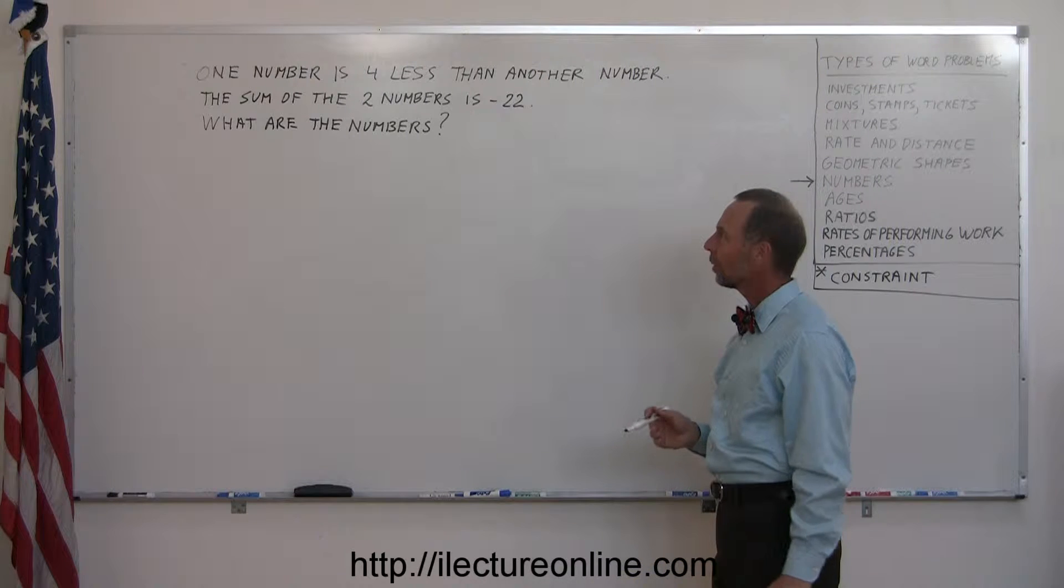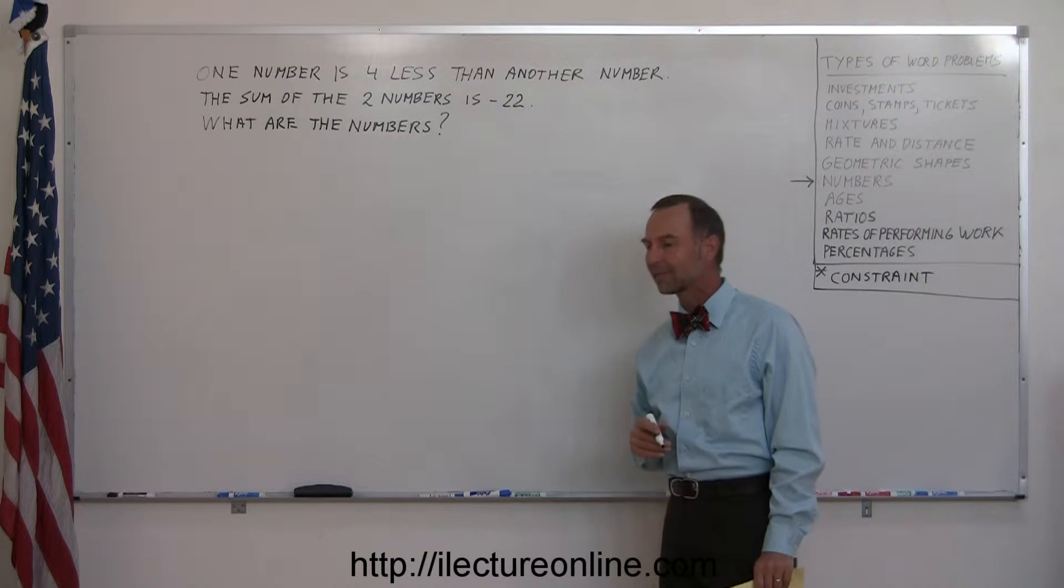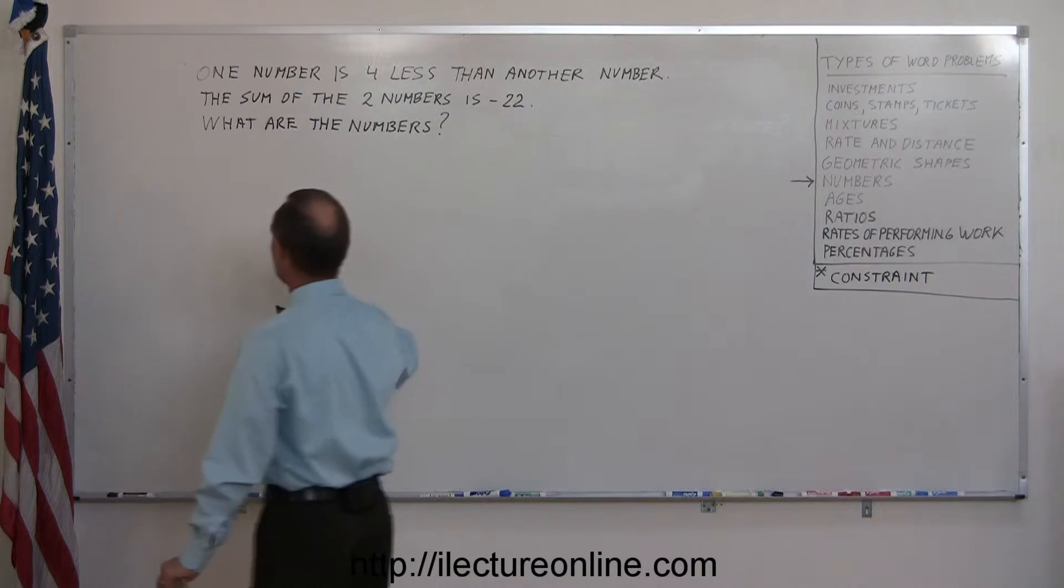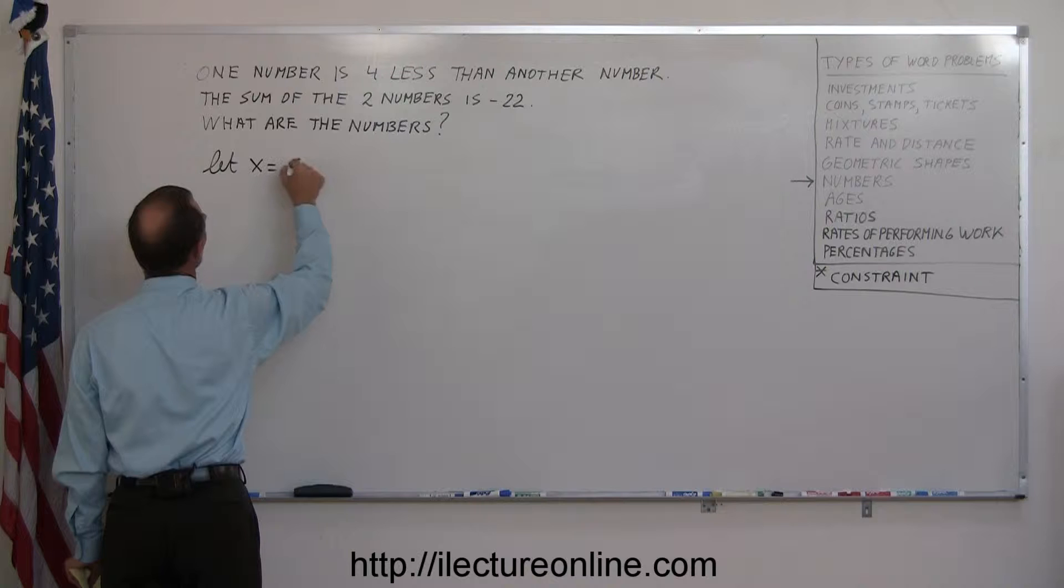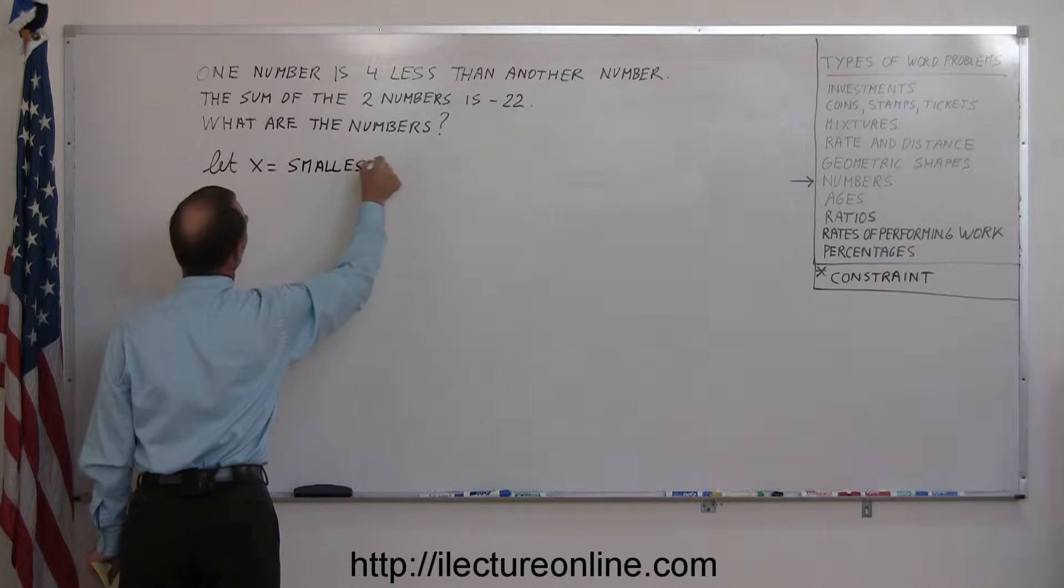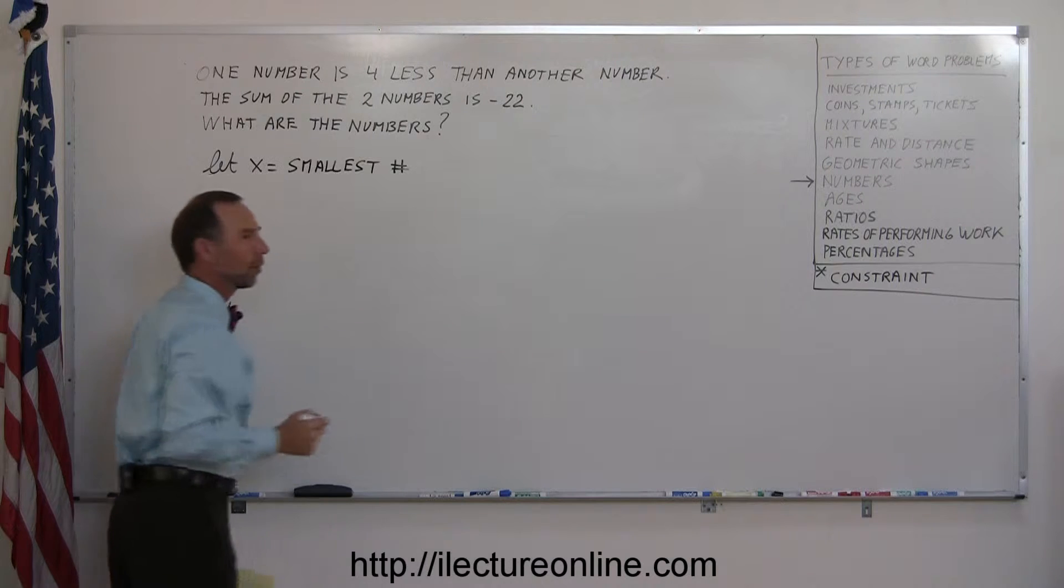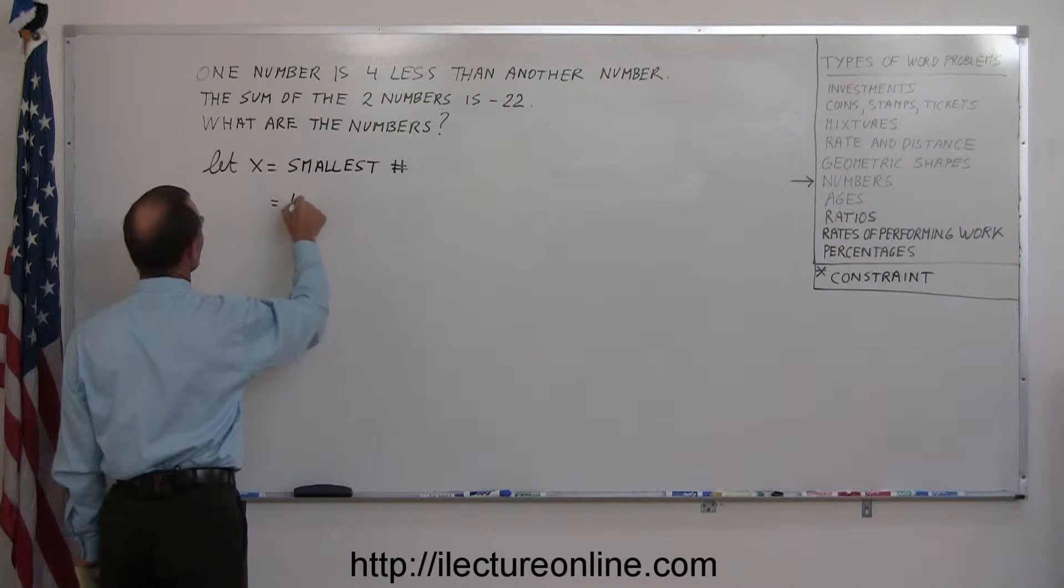So I have two numbers. One number is four less than another. Let x be the smallest number. So how do you express the larger of the two numbers? What is the largest number?